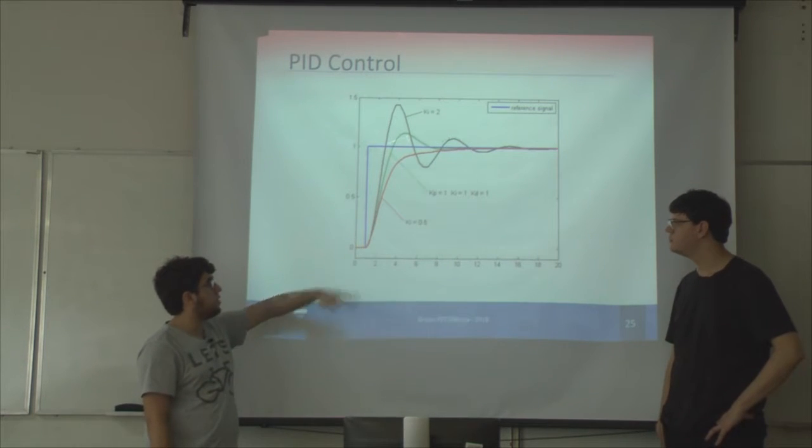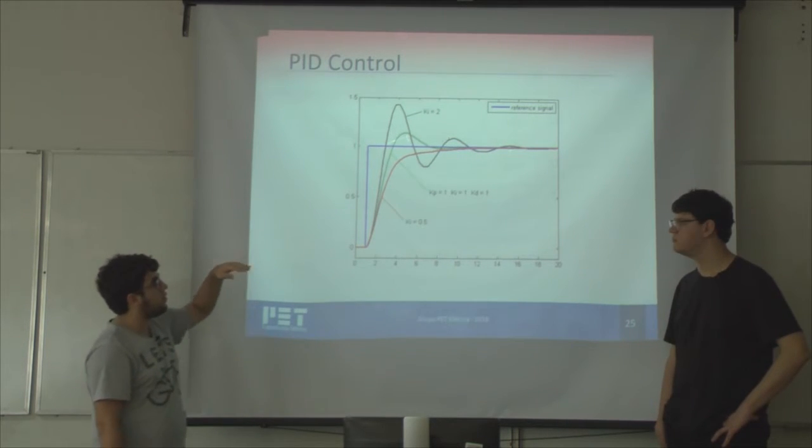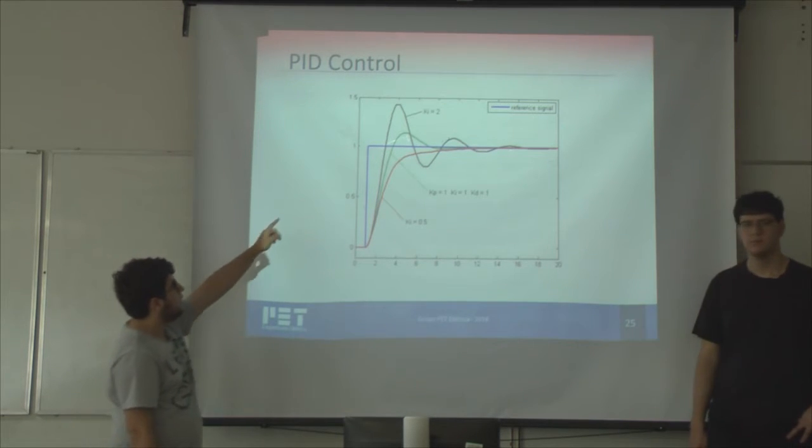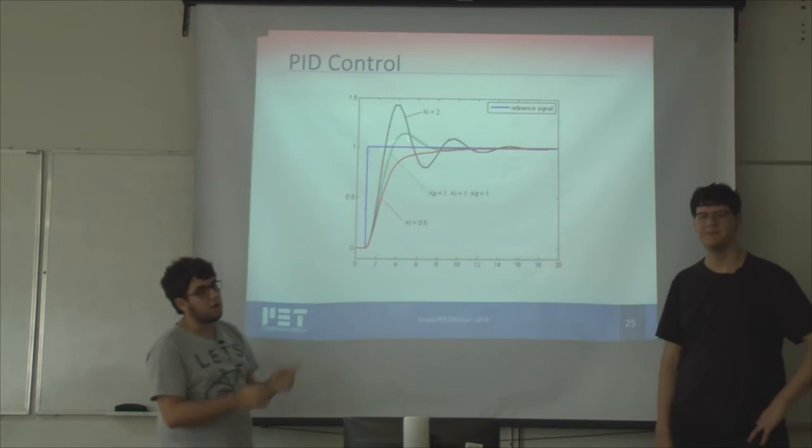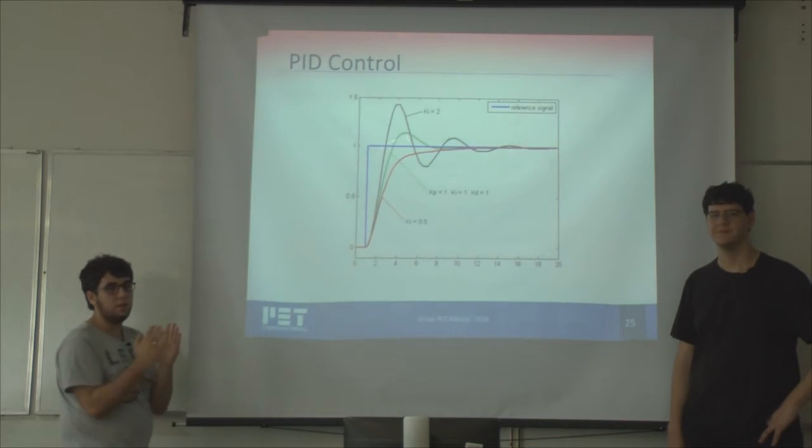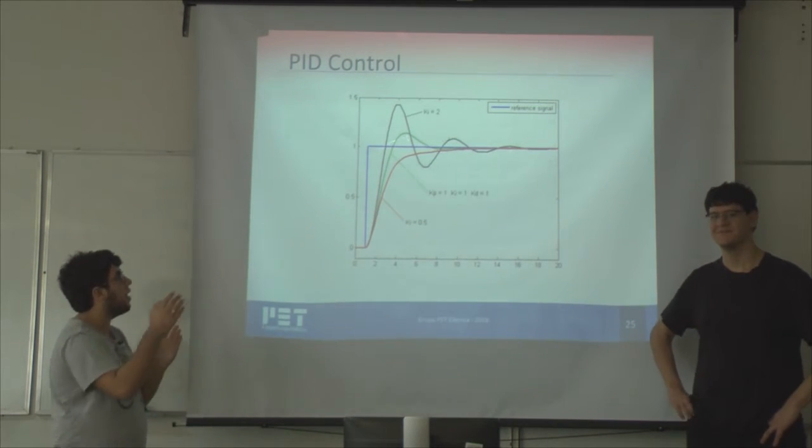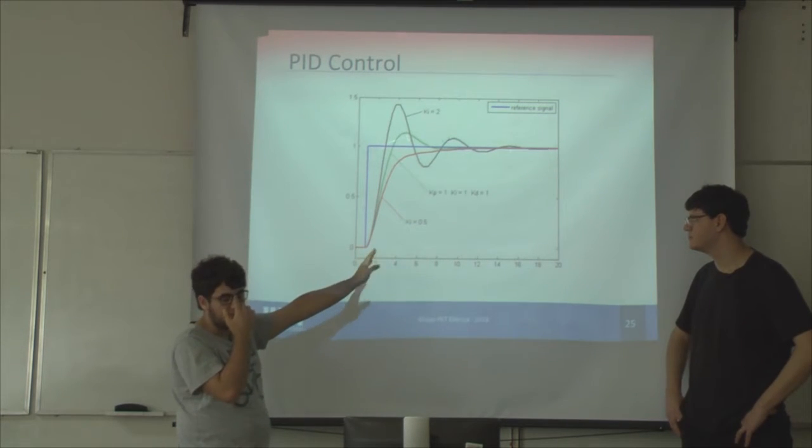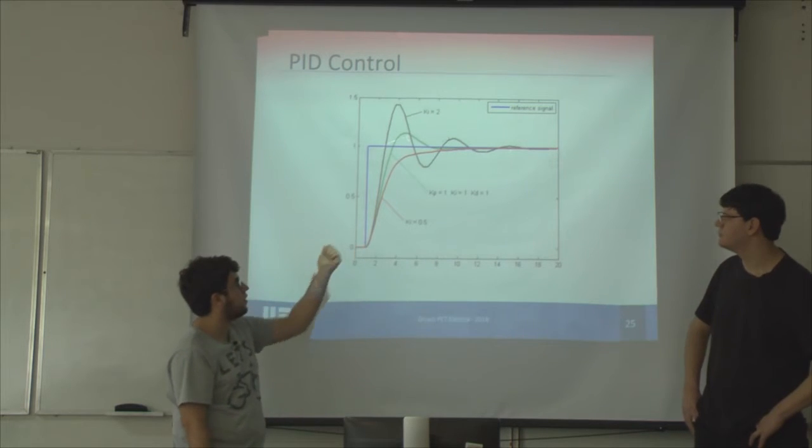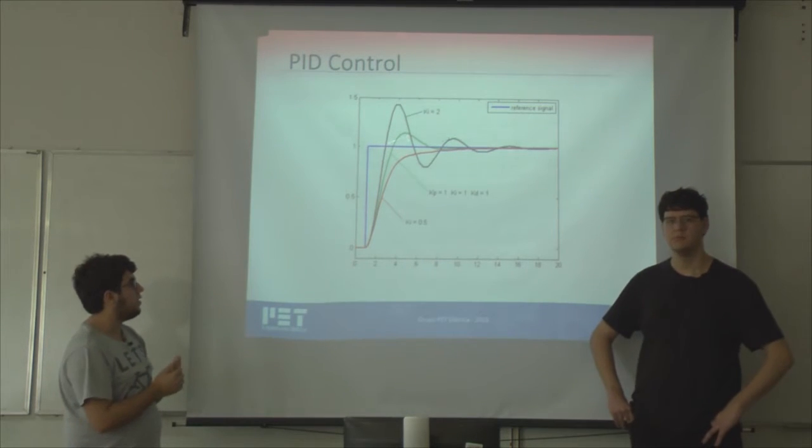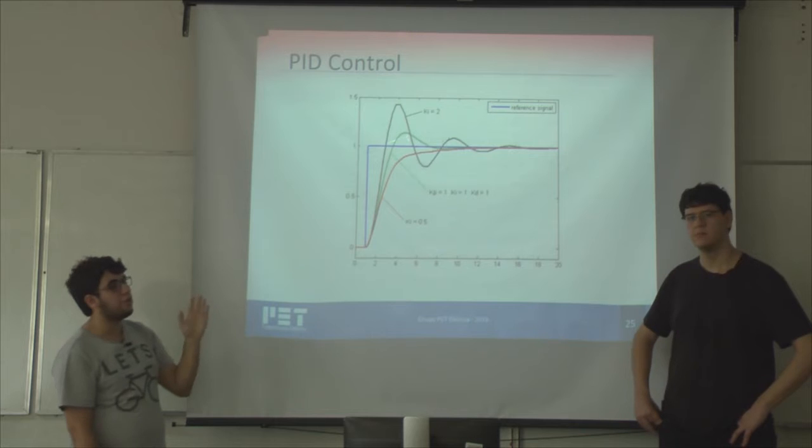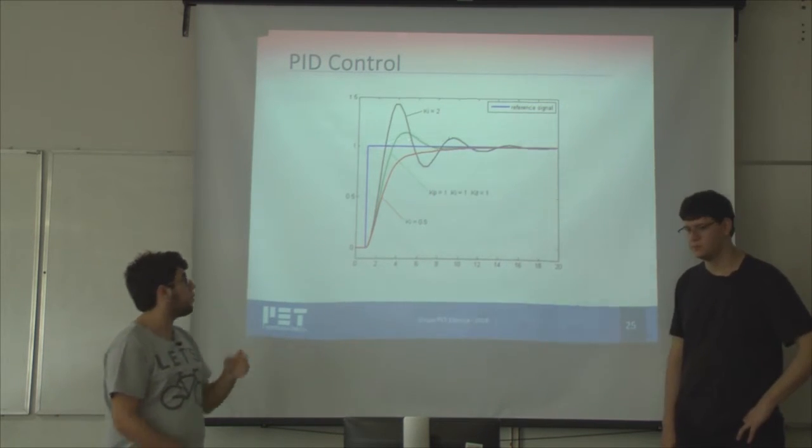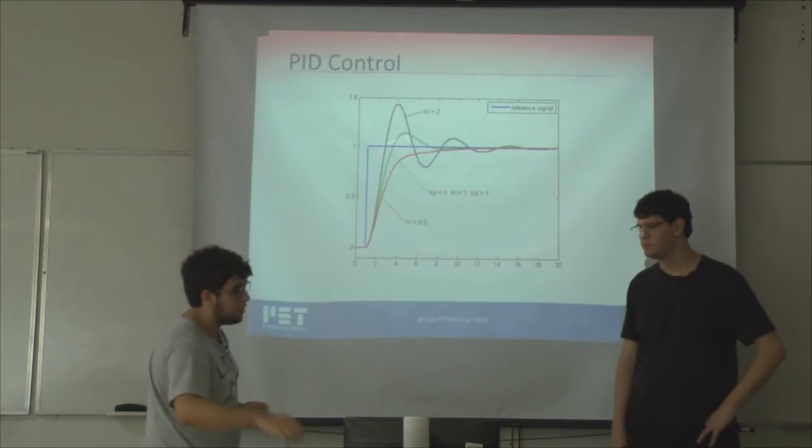Here are some curves that show how the answer values depend on the control system. Here you have only the integrative part that is low, so the answer is slow but doesn't have any overshoot. When Ki equals 2, it is a really quick response but has a high overshoot. And here is the most complete control system, with Kp, Ki, and Kd. It's not so fast but not so slow either. It has intermediate overshoot and has a proper transfer time to stabilize.